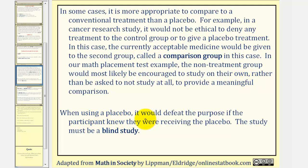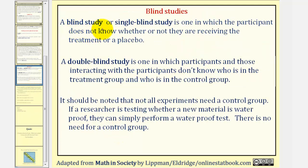When using a placebo, it would defeat the purpose if the participant knew they were receiving the placebo. The study must be what's called a blind study. A blind study, or single blind study, is one in which the participant does not know whether or not they are receiving the treatment or a placebo. A double blind study is one in which the participants and those interacting with the participants don't know who is in the treatment group and who is in the control group. It should be noted that not all experiments need a control group. If a researcher is testing whether a new material is waterproof, they can simply perform a waterproof test — there is no need for a control group.